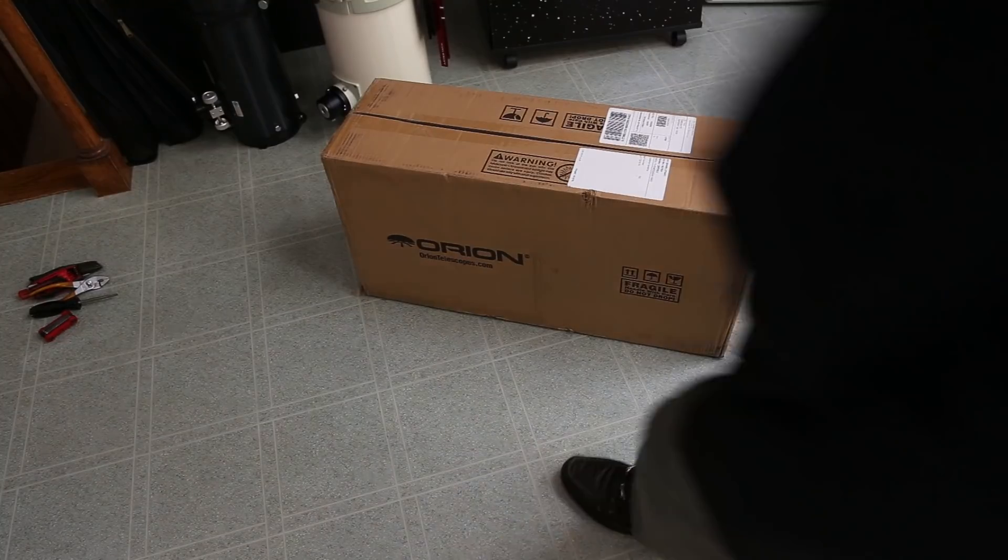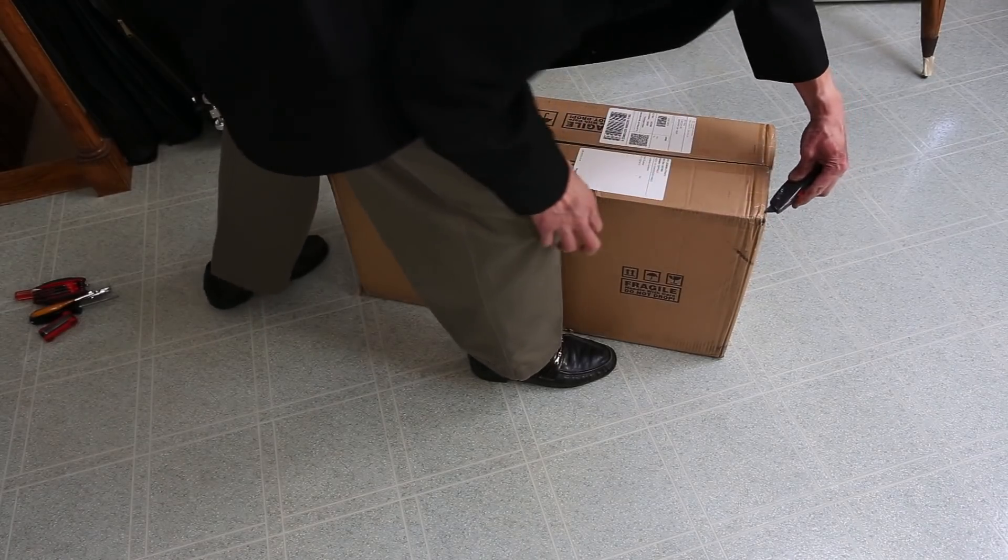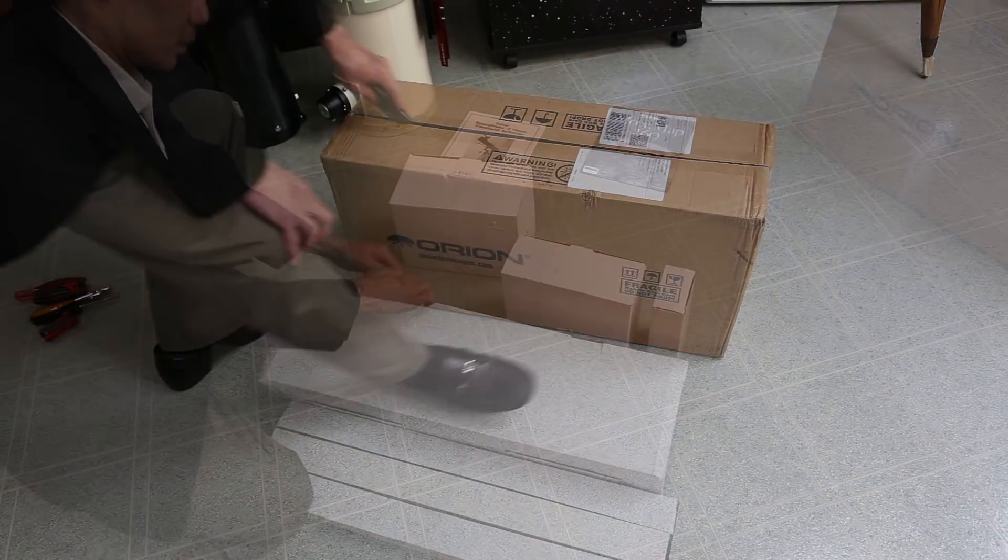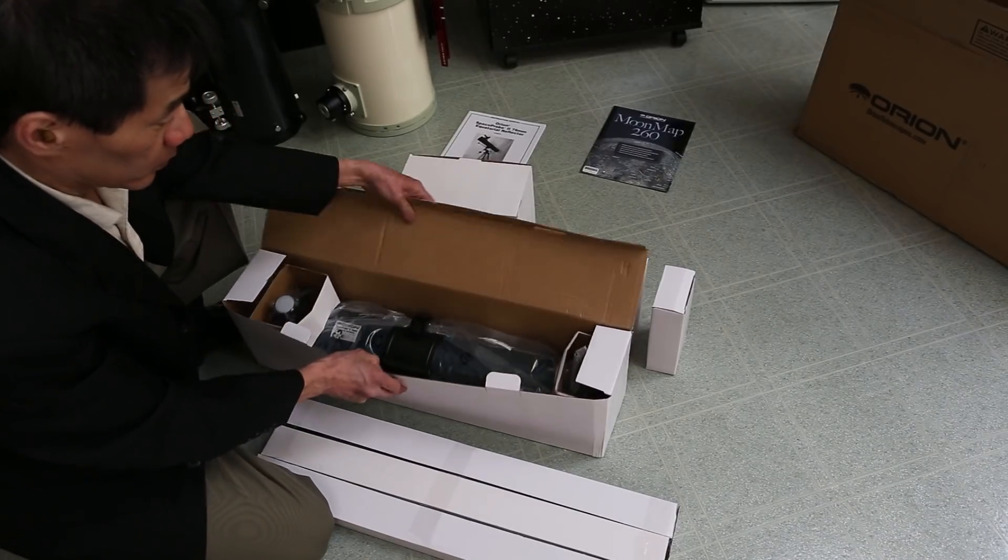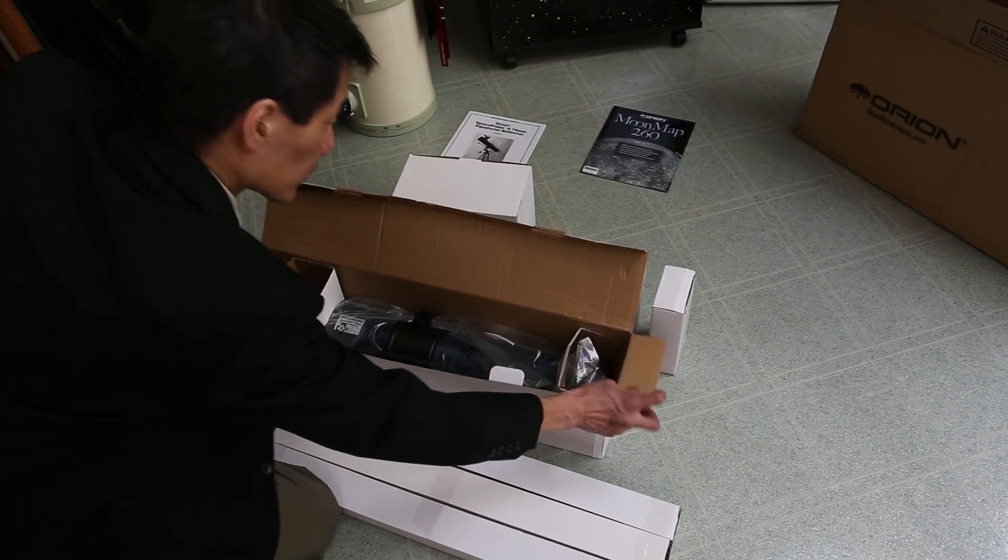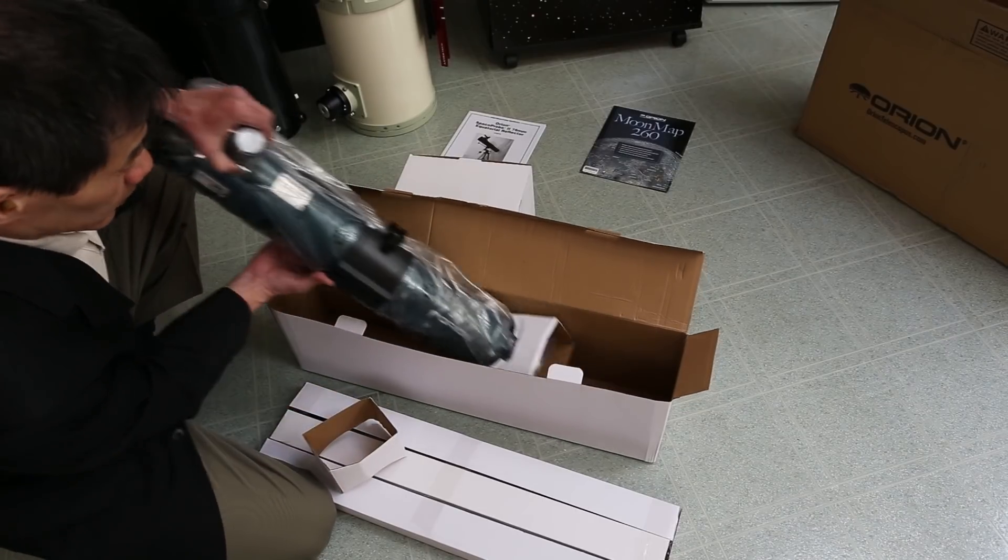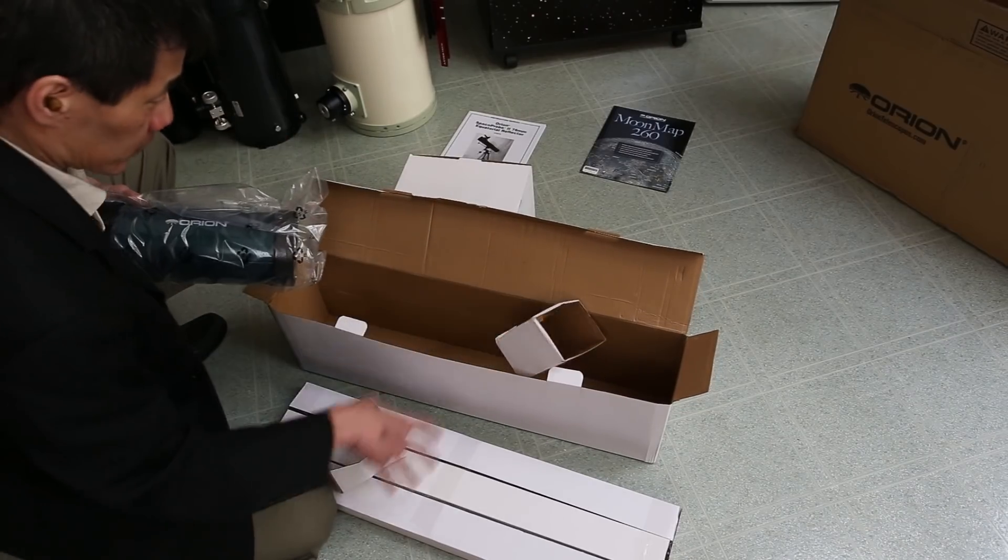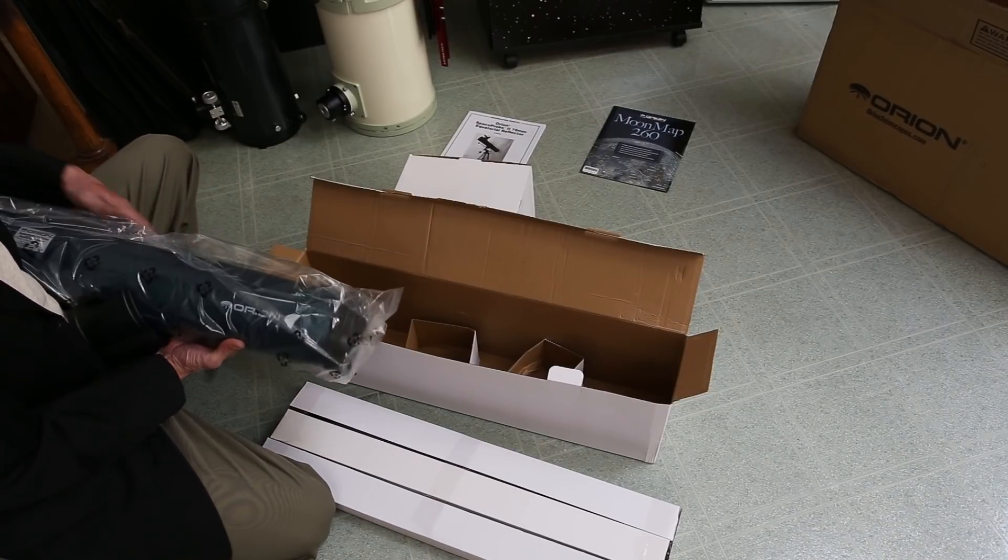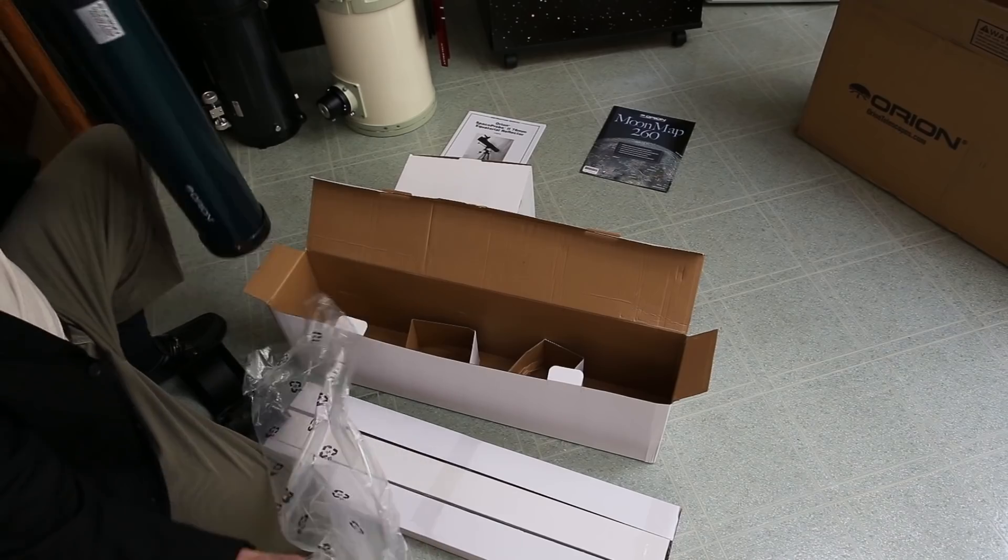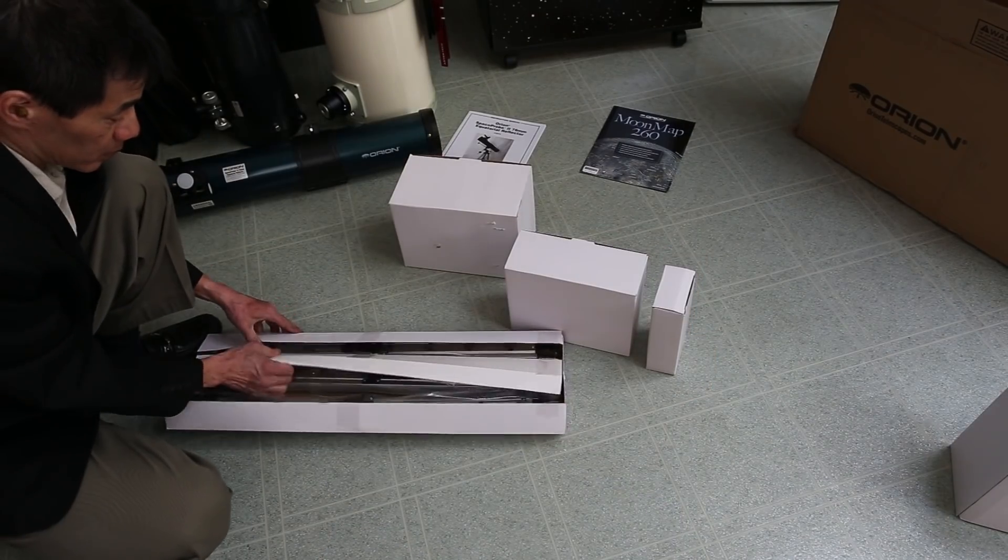So here's the unboxing, and I've assembled these Orion EQ1 mounts before. This is the smallest of their floor-standing equatorial mounts, and one thing that struck me this time is just how many little sub-boxes there are inside. There's the optical tube. It comes well-wrapped. One concern I had, you'll see me undo the tube ring here, that is a piece of plastic. They used to make those out of metal. The plastic's a little bit thin and brittle, a little bit of a concern there.